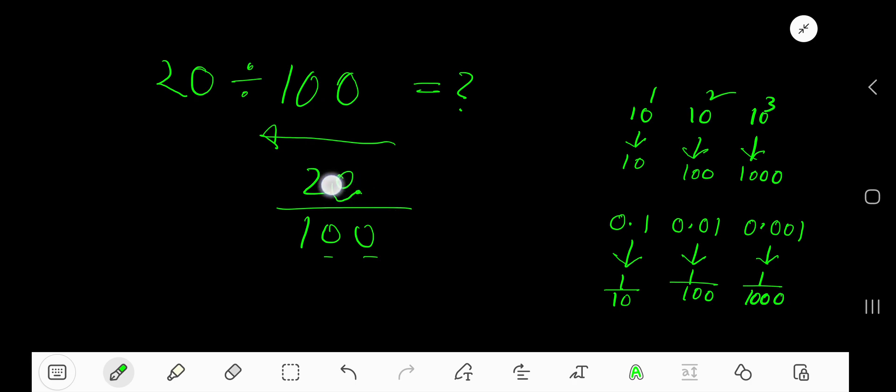Moving one digit, then two digits to the left, we get 0.2. You can add another zero here to make 0.20, showing that this is less than 1.